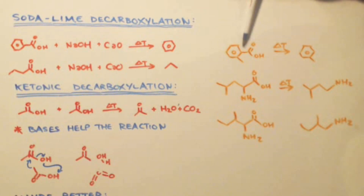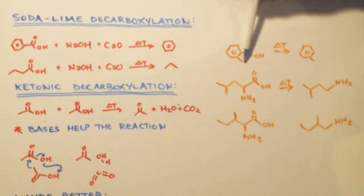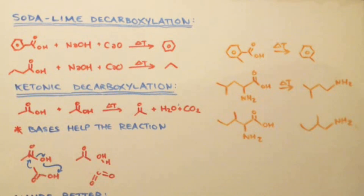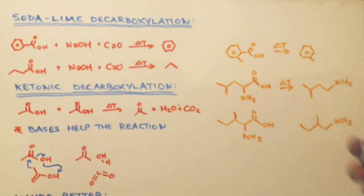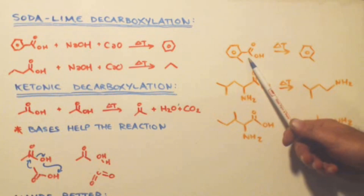I did this reaction — I made some toluic acid, heated it up, and instead of benzene, because you have the methyl group, I ended up with methylbenzene, which is toluene, at a terrible yield. But it wasn't because of the soda lime decarboxylation — it was more because of making the toluic acid that I got a poor yield.